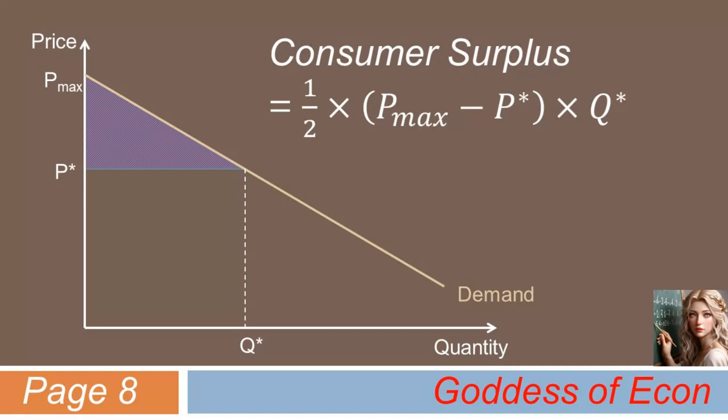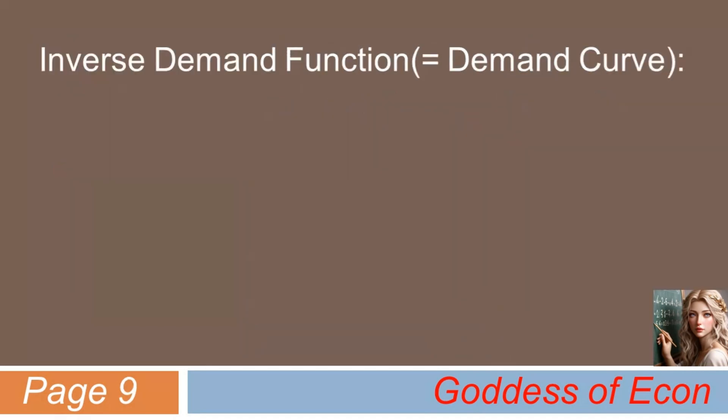Before we part today, let's solve the following consumer surplus problem together, just so that you don't readily forget what you've learned today. Okay, let's assume the inverse demand function is as follows: Price equals 100 minus 4 times quantity. The reason we call this an inverse demand function, rather than just a demand function, is because its dependent variable is the price rather than quantity. Normally, we say it's a demand function if the quantity demanded is a dependent variable instead.